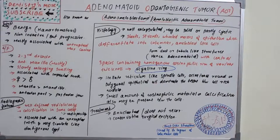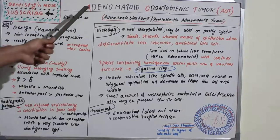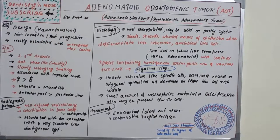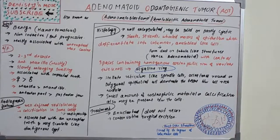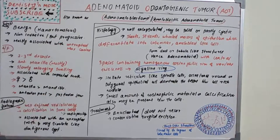Adenomatoid Odontogenic Tumor: as the name suggests, it has gland-like structure formation with distinctive histological features — that's why it got this peculiar name. Let's see the basic introduction.